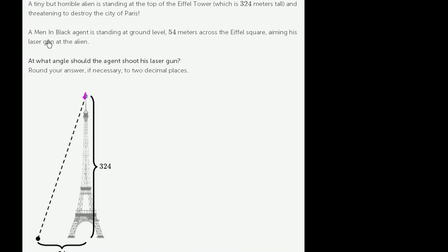A Men in Black agent is standing at ground level 54 meters across the Eiffel Square, from the center of the base of the Eiffel Tower, aiming his laser gun at the alien.